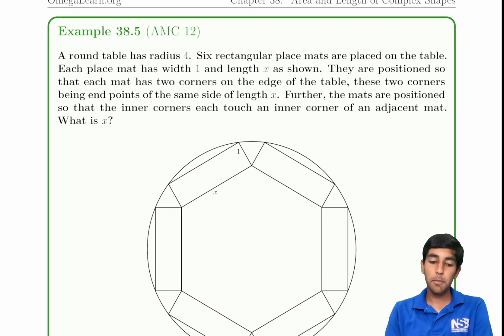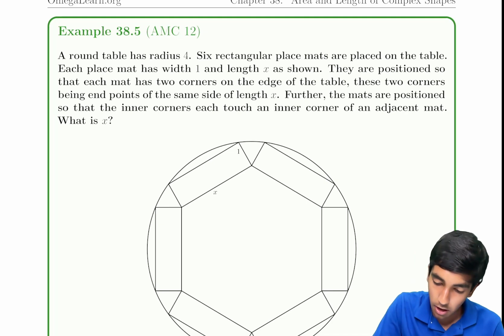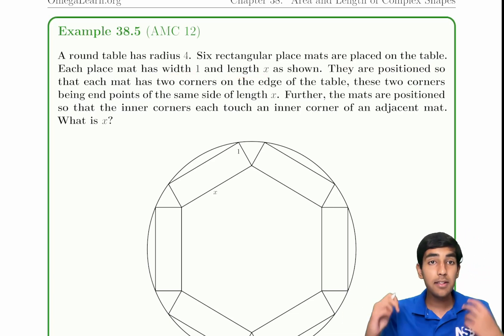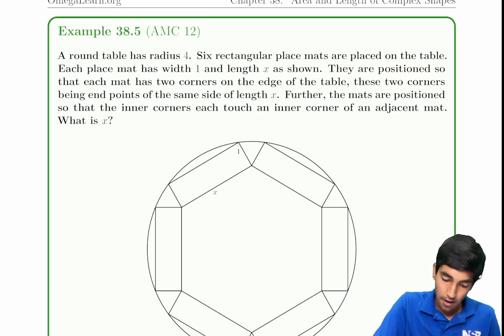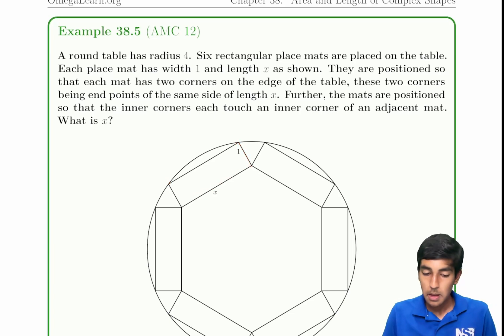A round table has a radius of 4. Six rectangular mats are placed on the table. Each mat has a width of 1 and length of x. They are positioned so that each mat has two corners on the edge of the table. We have a circle of radius 4 on the outside for us to find x.